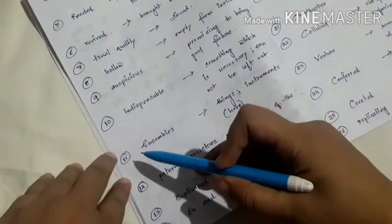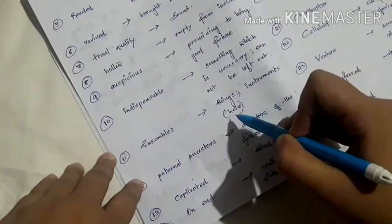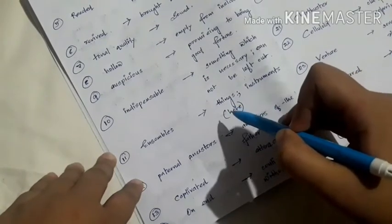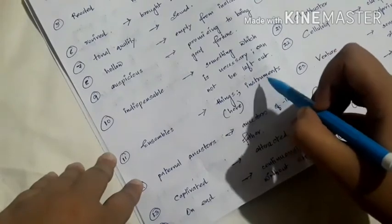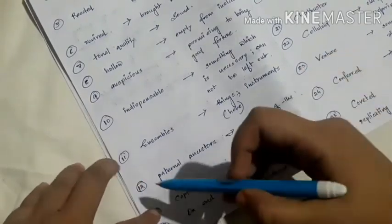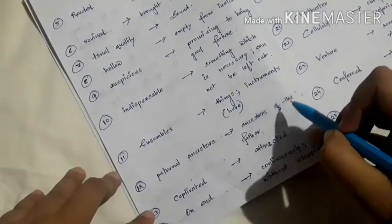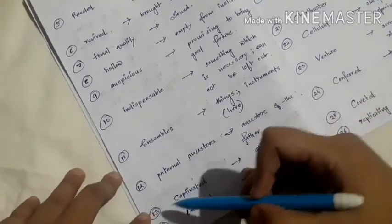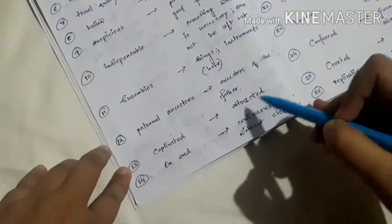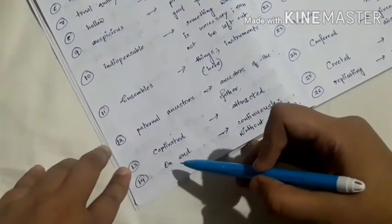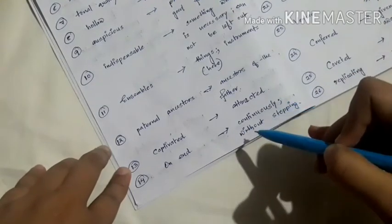Number eleven, ensembles, which means things, but here in this chapter the sound of music, ensembles refers to instruments. Number twelve, paternal ancestors, which means the ancestors of the father. Number thirteen, captivated, means attracted. Number fourteen, on end, which means continuously or without stopping.